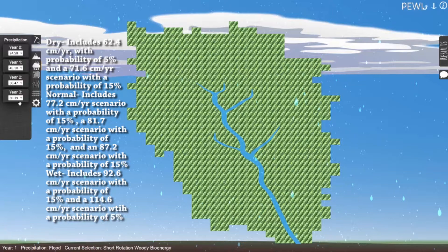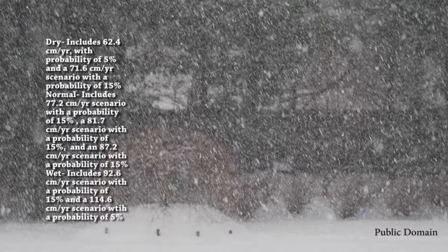The normal category includes the 77.2 cm per year (30.39 inches per year) scenario with a probability of 15%, the 81.7 cm per year (32.16 inches per year) scenario with a probability of 15%, and the 87.2 cm per year (34.34 inches per year) scenario with a probability of 15%.